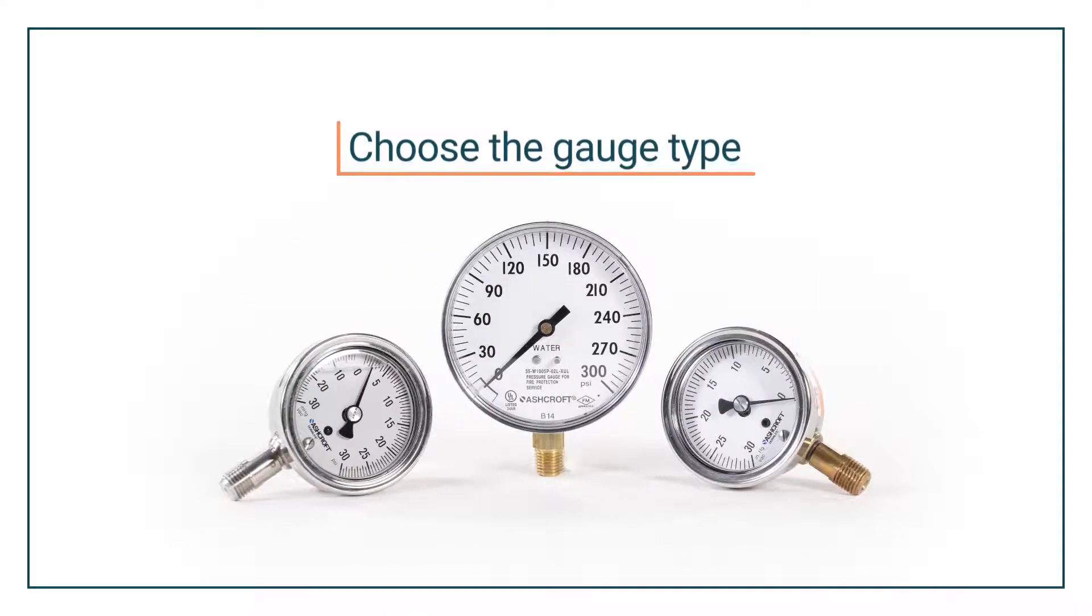First, choose the gauge type. At the most basic level, gauges can be divided into three types: pressure, vacuum, and compound.